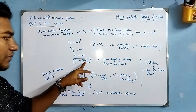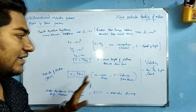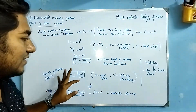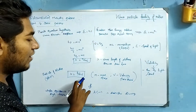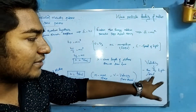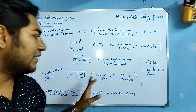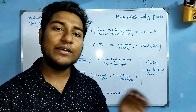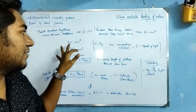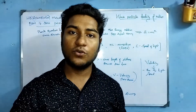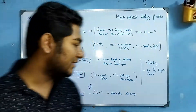Now if we use a particle of matter instead of a photon, we replace c with v, where v is the speed of the particle. If we use mv — the momentum of a material particle — we can apply the same equation. So for a material particle, lambda equals h divided by mv. This equation is the same form as before, and the particle can exhibit wave behavior.